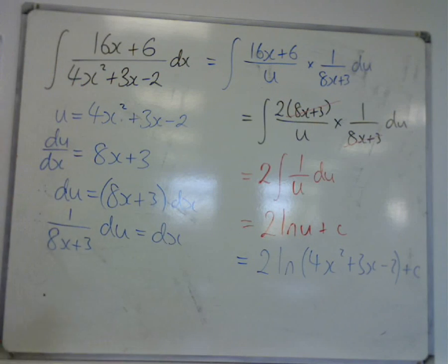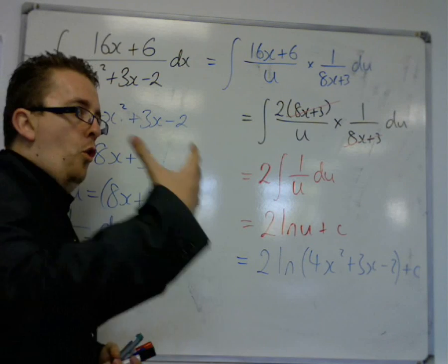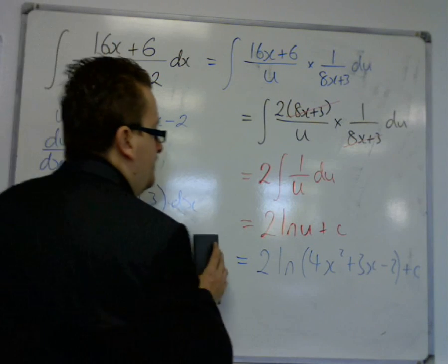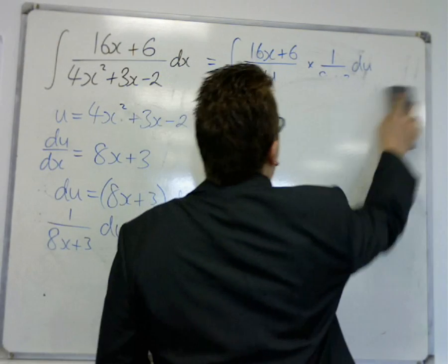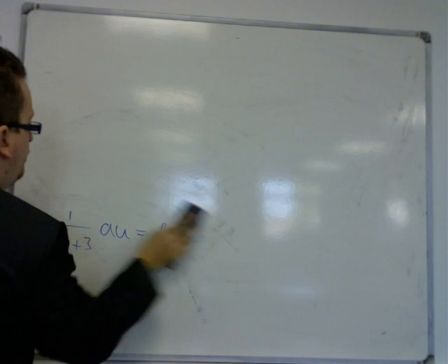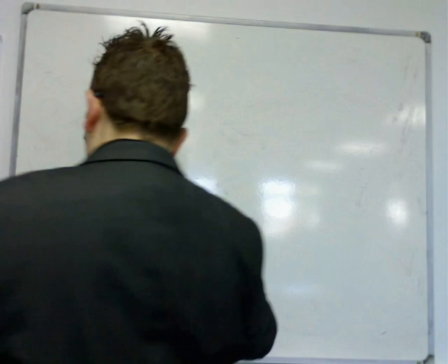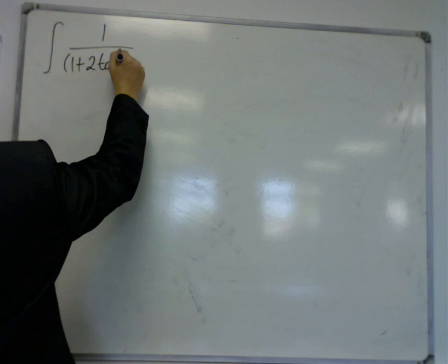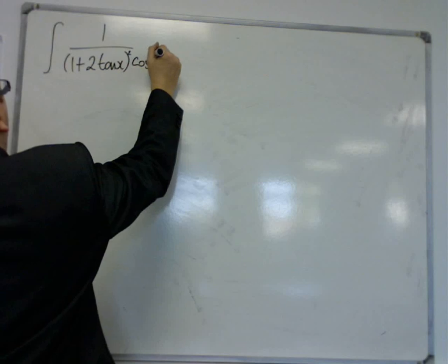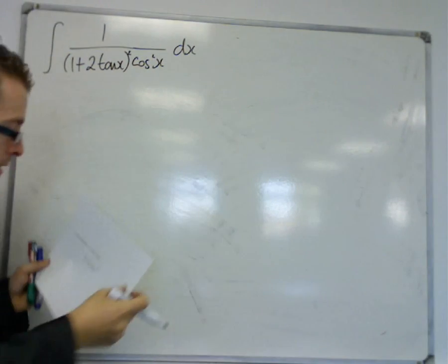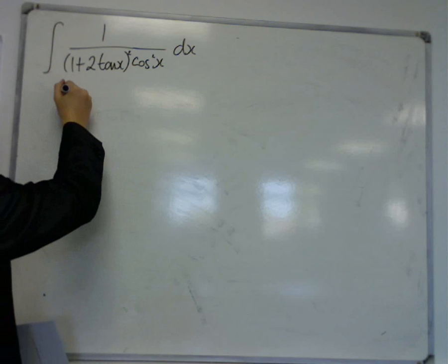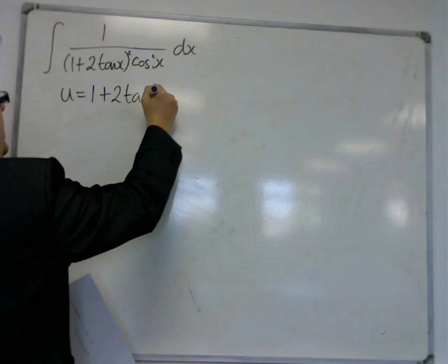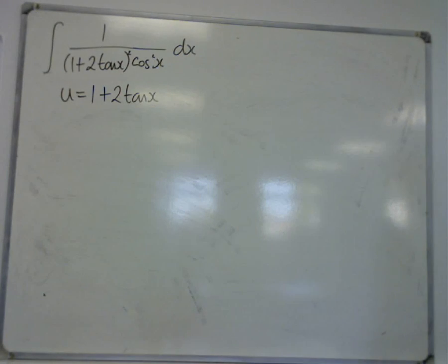Now, let's see another problem that isn't either reversing chain rule or a log trick. And it's something slightly different, but it's still an indefinite integral. So, this is from an exam paper. And the integral in question looks like this. It's 1 over 1 plus 2 tan x squared cos squared x dx. And we're told to use u is equal to 1 plus 2 tan x as the substitution.